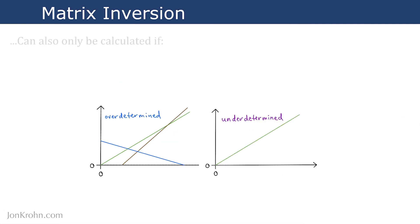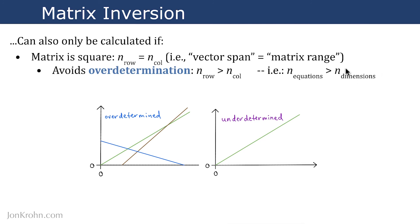Another limitation for matrix inversion is that it can only be calculated if a matrix is square. So the number of rows in the matrix is equal to the number of columns. In some more technical matrix terminology, we could say that the vector span must be equal to the matrix range. So the vector span is represented by the rows and the matrix range is the number of columns. I'm not going to talk too much about that here, but you can look up those terms on your own if you're really interested. So when a matrix is square, that avoids what we call overdetermination, where the number of rows is greater than the number of columns.